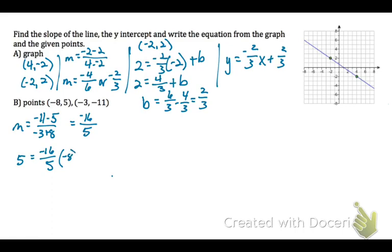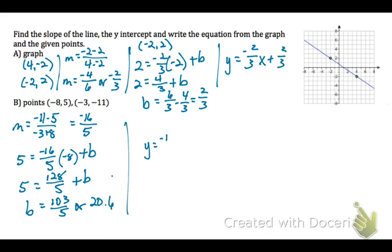We plug in a point x and y and the slope and solve for our b value. So our b value is 103 fifths or 20.6. And now we can use our b value and our slope, our m, to write the equation. Alright, just a brief review of how to write an equation of a line in slope-intercept form.